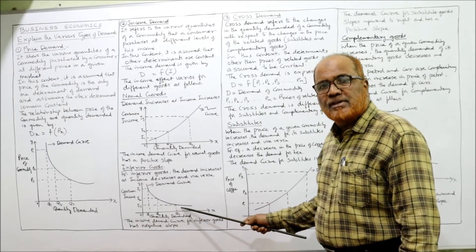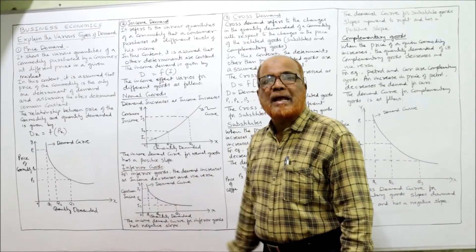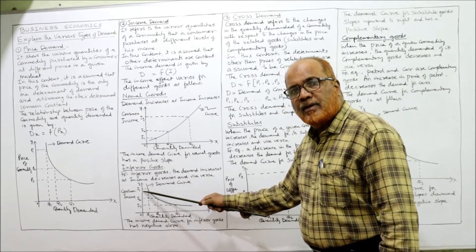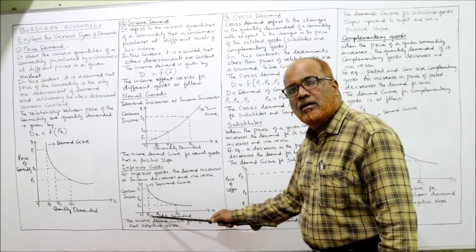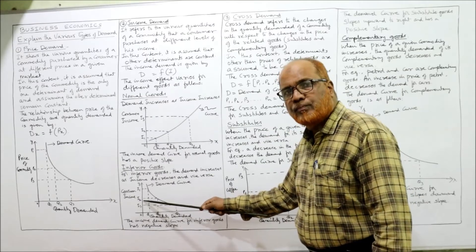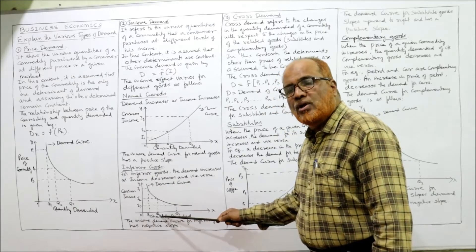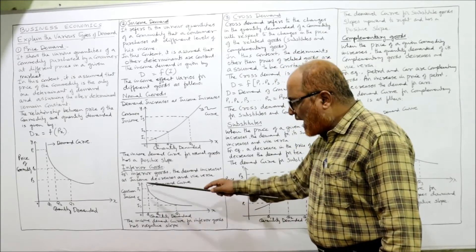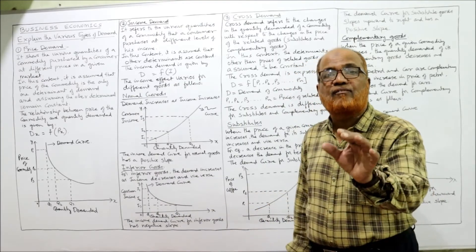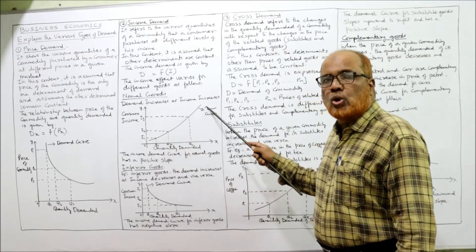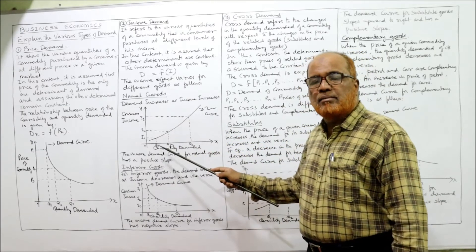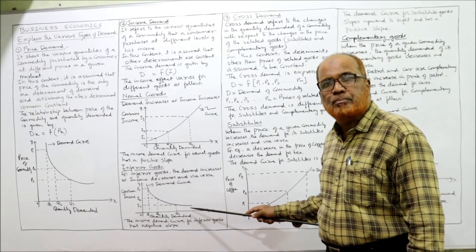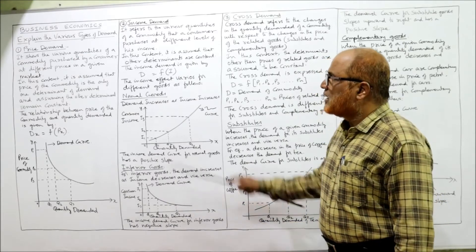For inferior goods, this is shown by a downward sloping curve. When income is I1, demand for inferior goods is Q1. When income decreases from I1 to I2, quantity demanded increases to Q2. When income further decreases to I3, quantity increases to Q3. So as income decreases, demand increases for inferior goods — a negative or inverse relationship. This concludes the explanation of income demand.